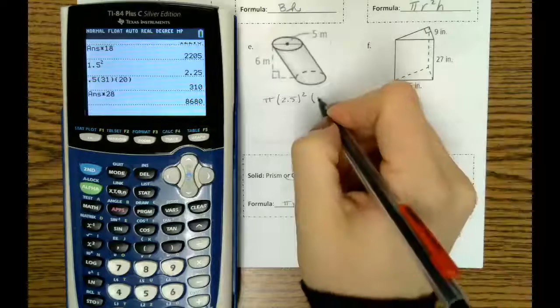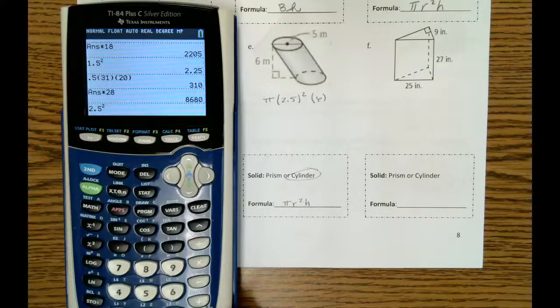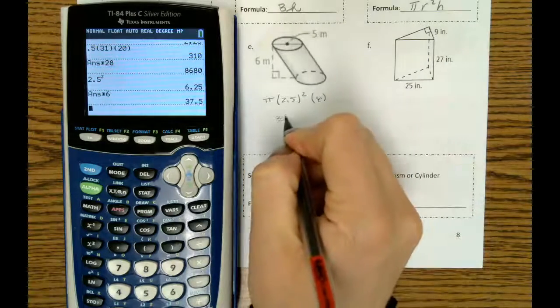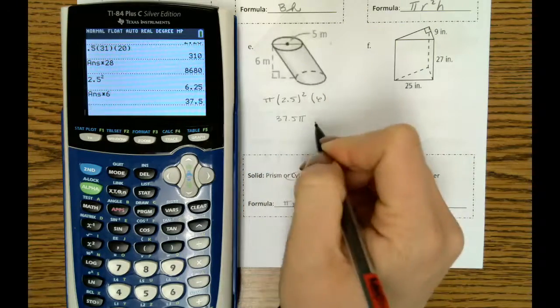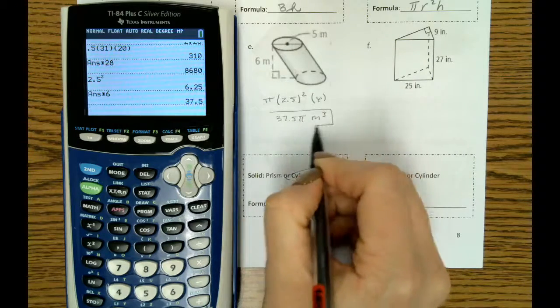Times our height, which is 6. And so since we're leaving it in terms of pi, we'll do 2.5 times 6, which is 37.5. And it will be in terms of pi. And that will be meters cubed.